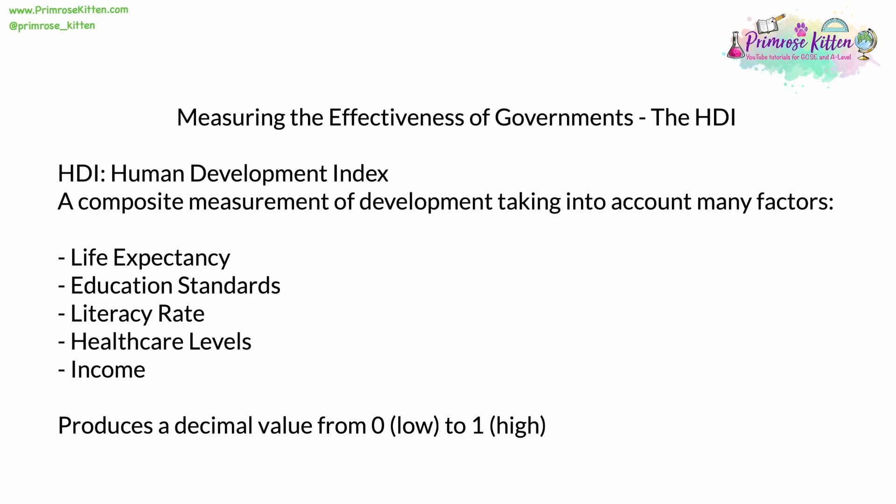There are many ways to measure the effectiveness of governments, none of which are uncontroversial, and all of which are subjective. However, the main method used is the Human Development Index, which is calculated usually by the UN. This is often known as the HDI, and it is what is known as a composite measurement, meaning it takes into account many different factors.